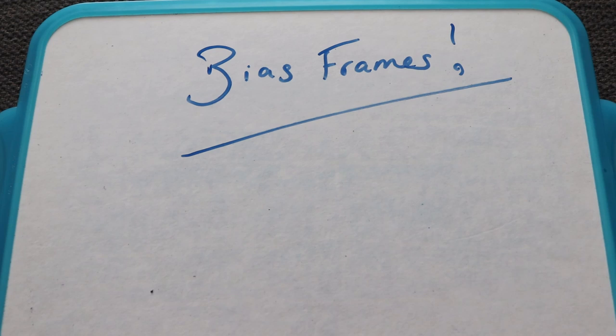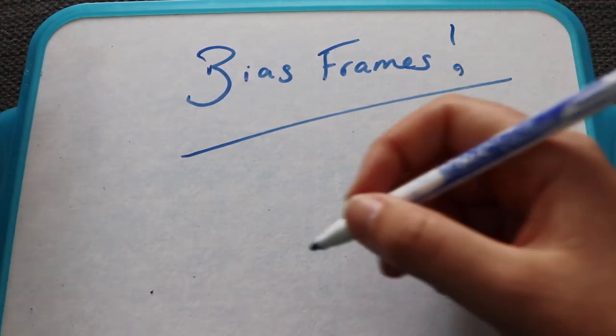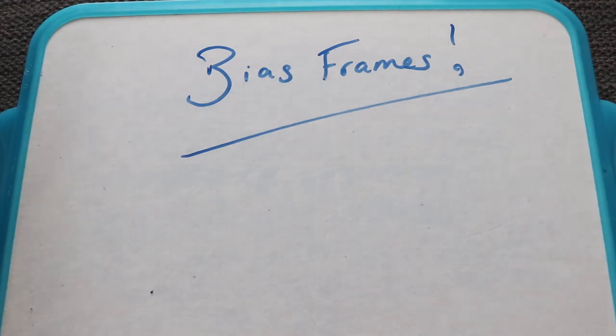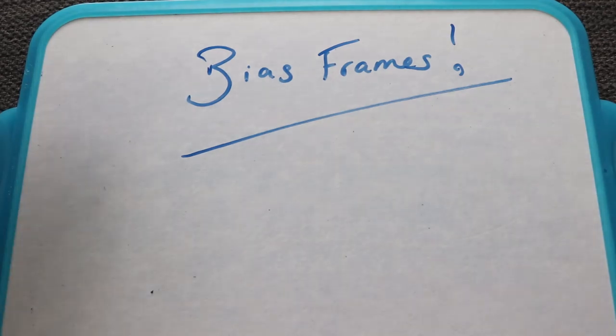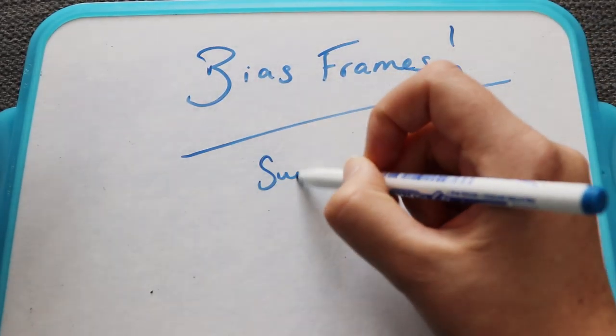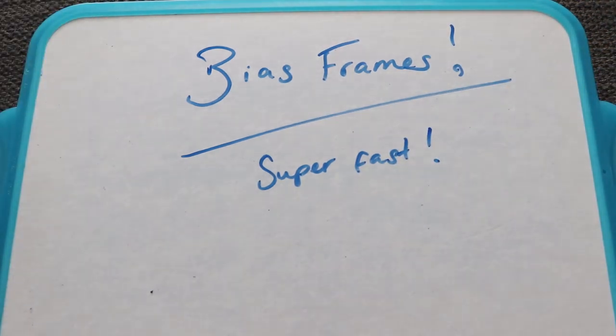So next up is bias frames. Now these are really, really, really easy to take. So stick the cap on your camera or telescope or DSLR and set your camera to the fastest shutter speed. So super fast.